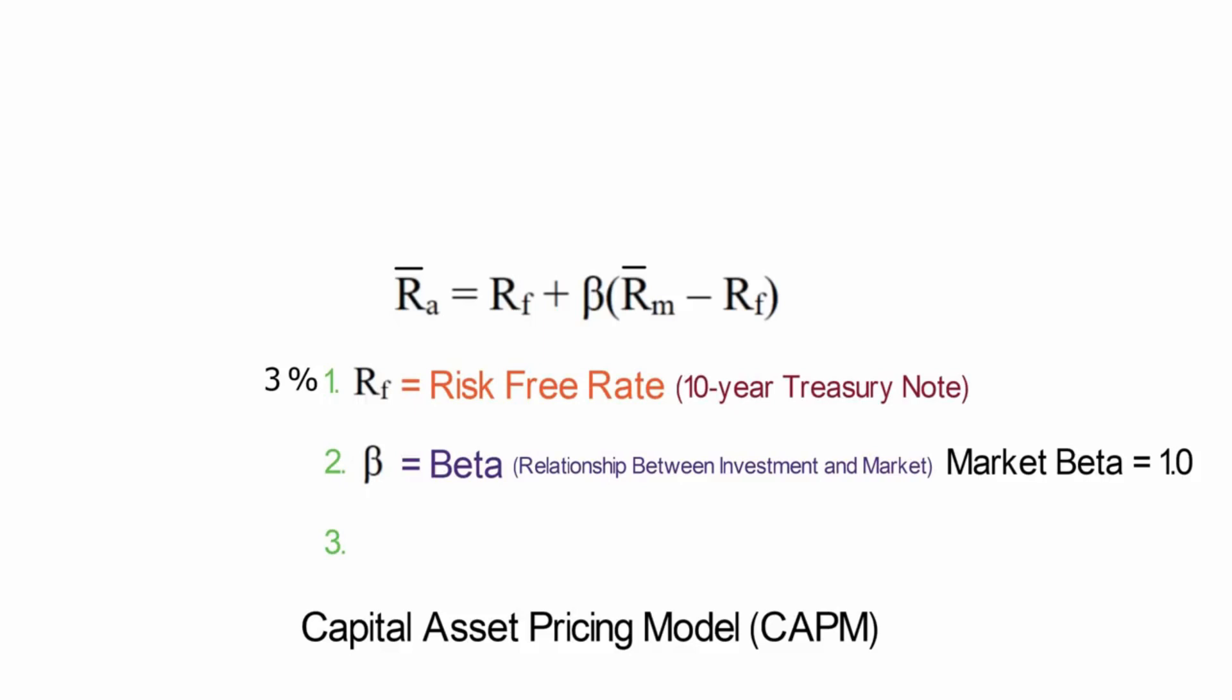So, let's use Apple stock as an actual example. Apple's beta is 0.99 and this is mighty close to 1. So what does this tell us? Well, it tells us that Apple stock acts very similar to the market.